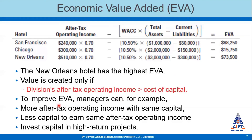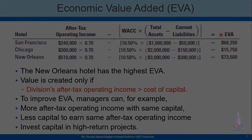To improve economic value added, managers can: first, earn more after-tax operating income with the same capital; second, use less capital to earn the same after-tax operating income; or third, invest capital in higher-return projects. These are the three approaches through which we can improve the economic value added of a segment or division.